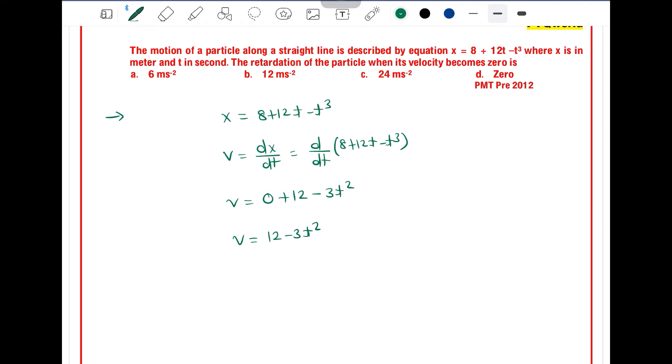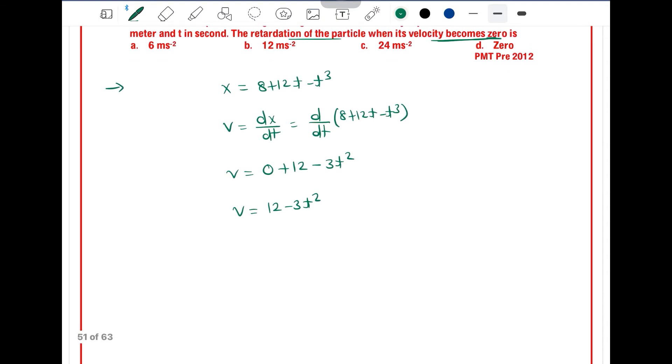Now, to find the retardation when velocity becomes zero, first we find the time at which velocity is zero. So put velocity as 0: 0 = 12 - 3t². Therefore, 3t² = 12.